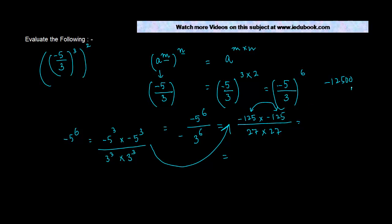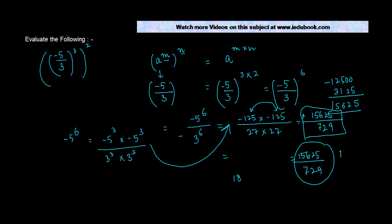It becomes 15,625 with a positive sign, divided by 27 times 27. Working through the multiplication: 27 times 7 is 189, 27 times 2 is 54 plus the carry... So I get 15,625 divided by 729, which is my answer.